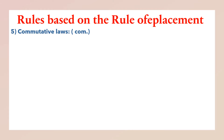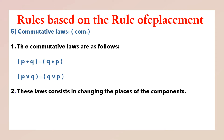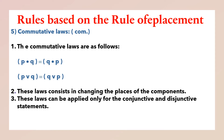Here we will be studying the fifth rule based on the rule of replacement, that is commutative laws. Commutative laws are as follows: P dot Q is equivalent to Q dot P. The second law is P wedge Q is equivalent to Q wedge P. These laws consist in changing the places of the components; that is, these laws can be applied only for conjunctive and disjunctive statements.